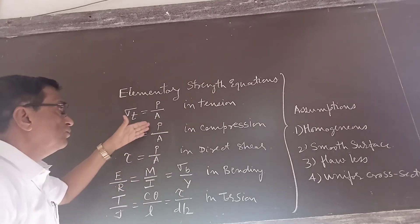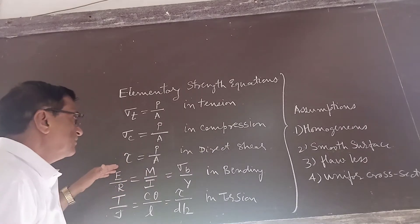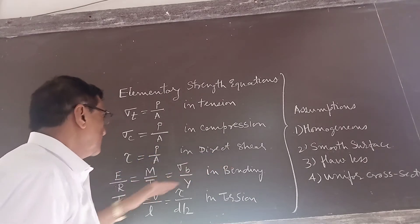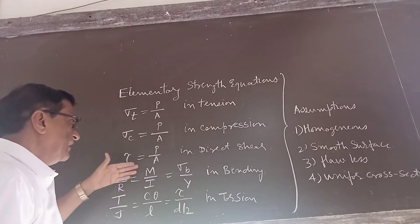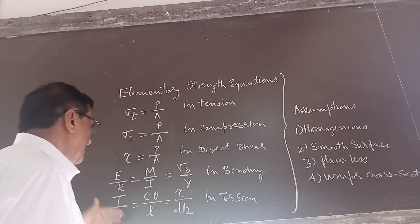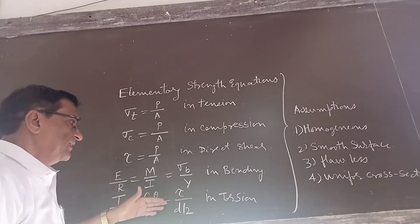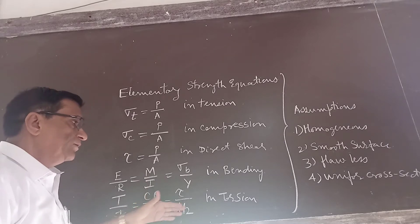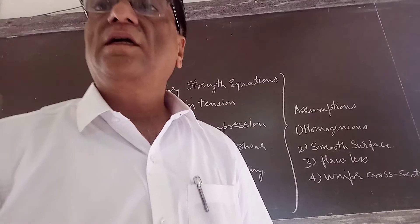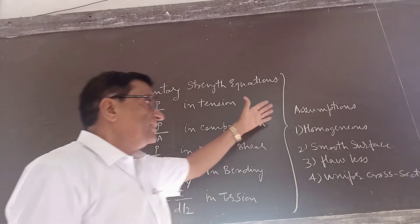Sigma C equal to P upon A in compression, tau equal to P upon A in shear, E upon R and M upon I equal to sigma B upon I in bending, and T upon J equal to C theta upon L equal to tau upon D by 2 in torsion. These are the strength equations based on these assumptions.